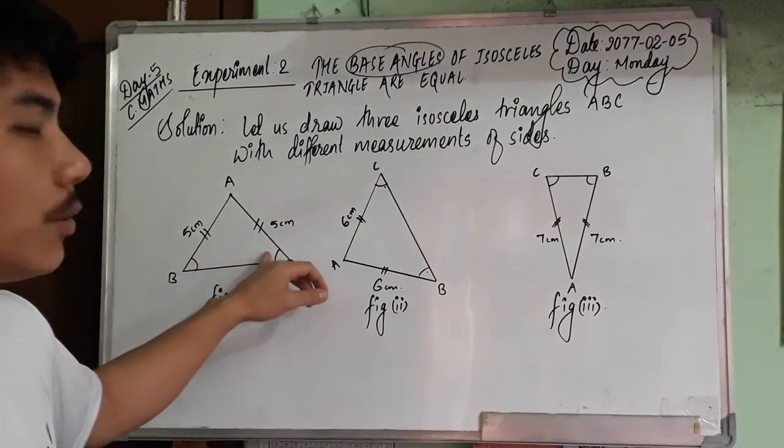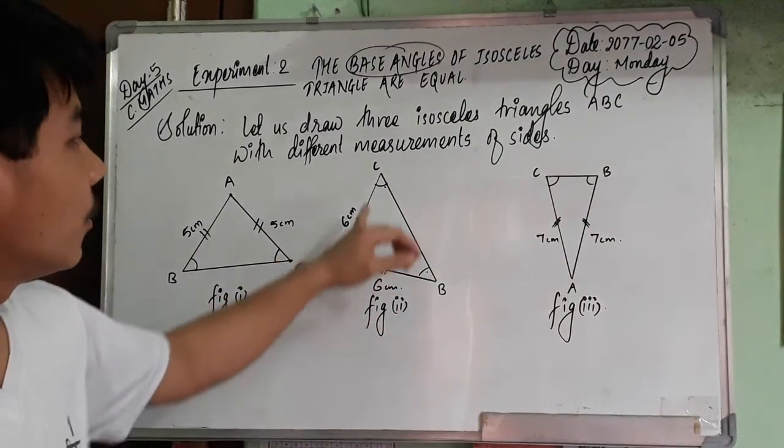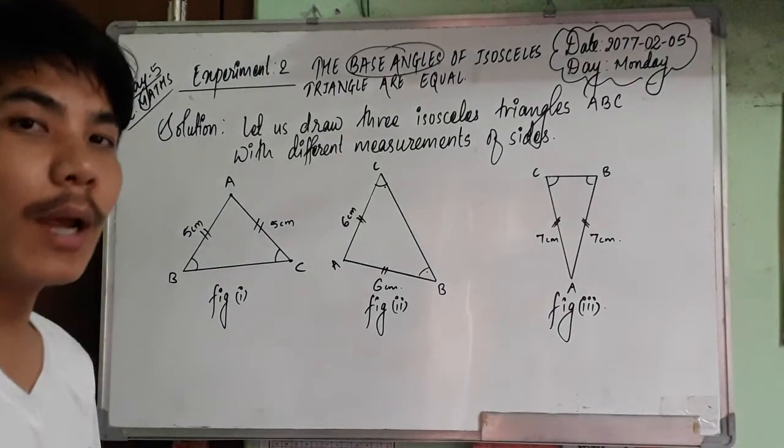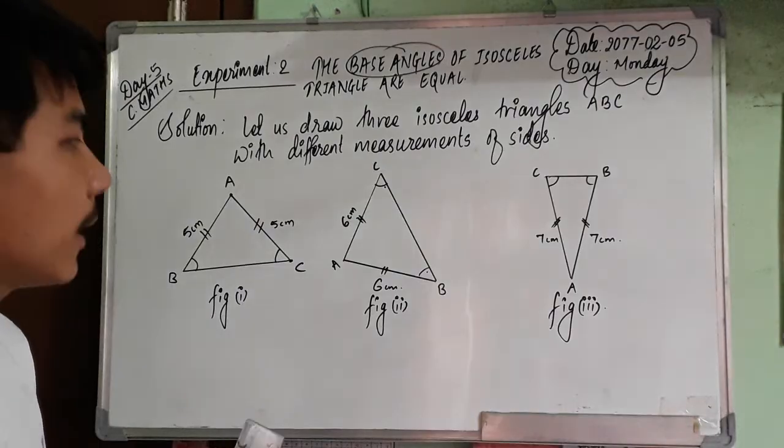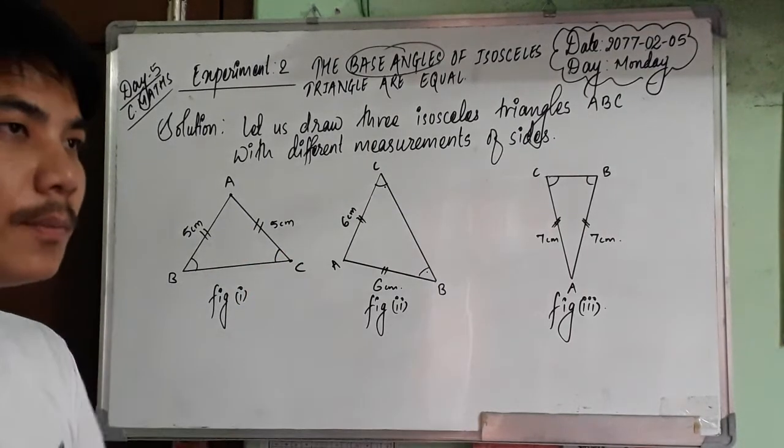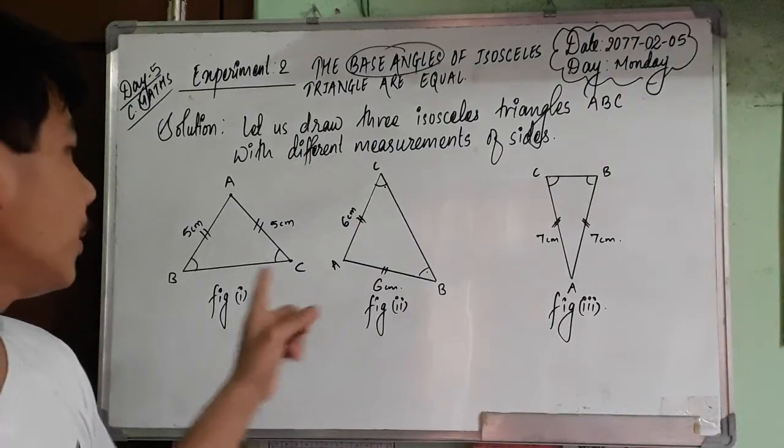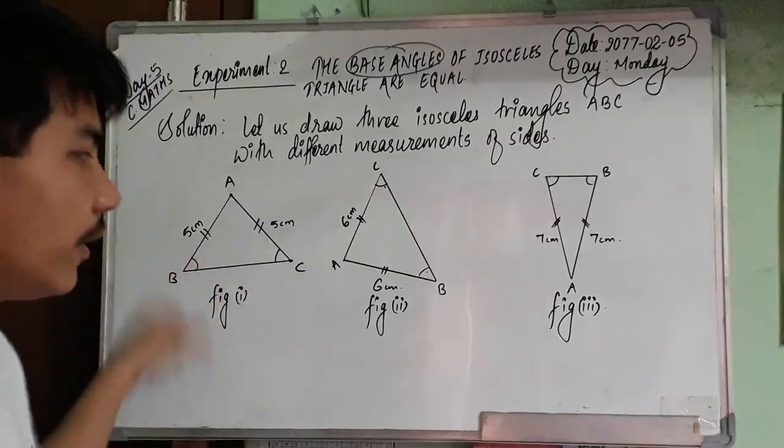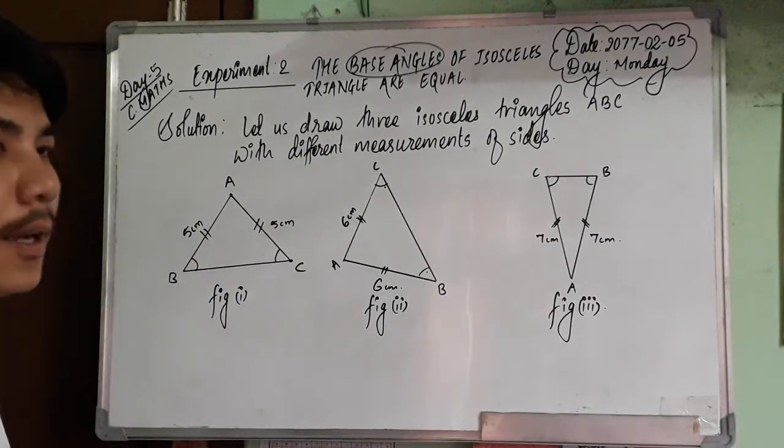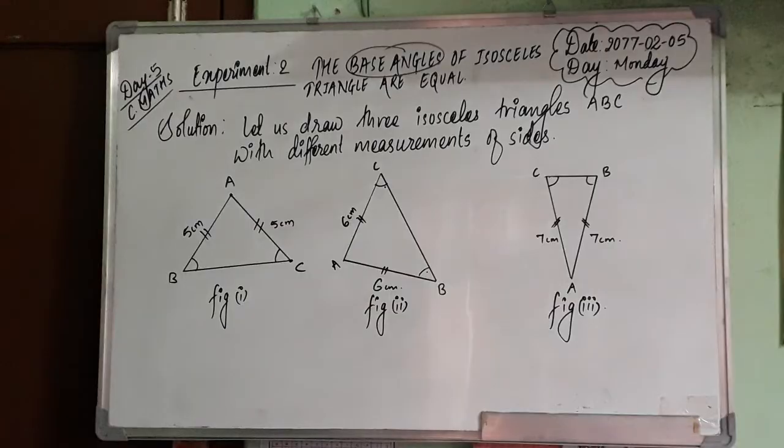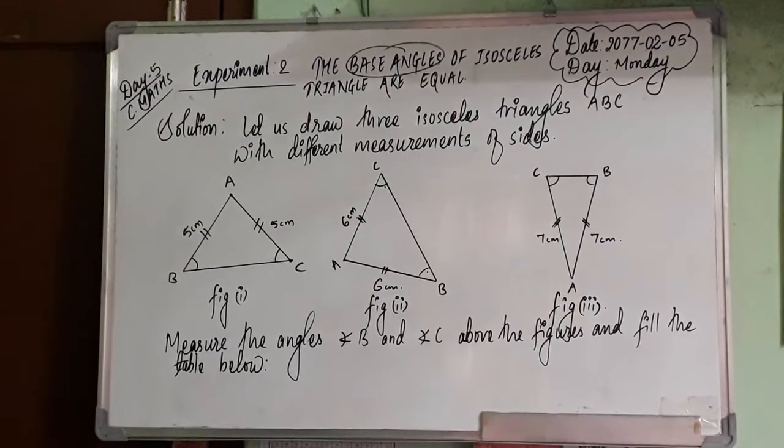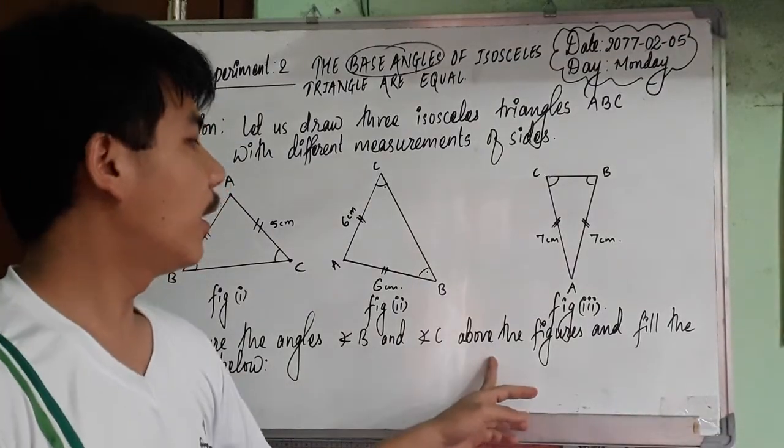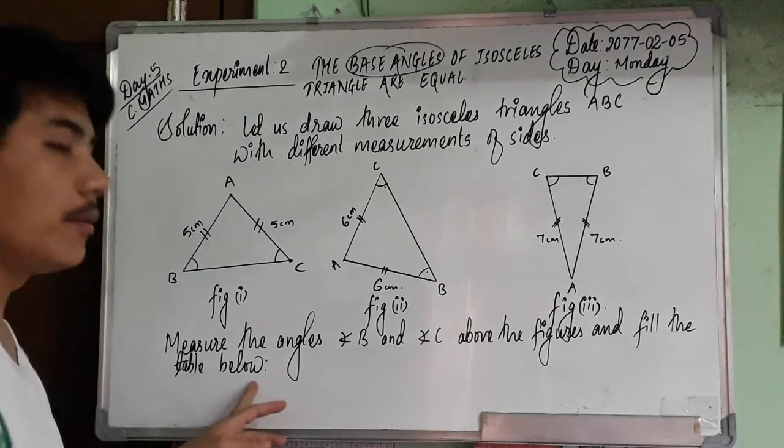Now for the two angles, like in Experiment Number 1, we need to make a table. We have columns - we'll make a table. Measure the angles B and angle C above the figures and fill the table below.